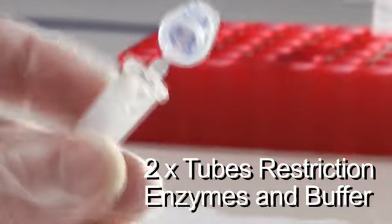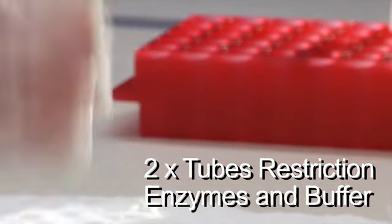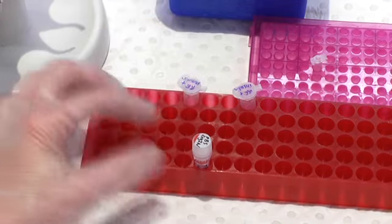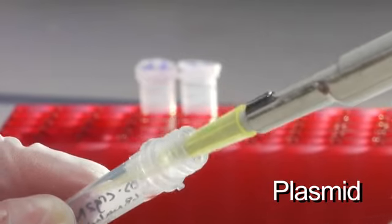Restriction enzymes are naturally used by bacteria to cut up any invading DNA. But we're going to hijack them and use them for science. To start the process, I have to prepare two tubes of restriction enzyme and buffer.